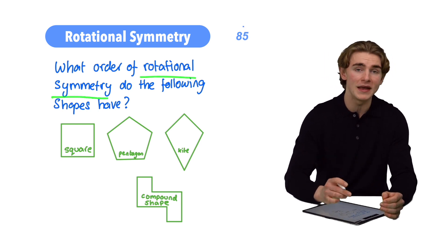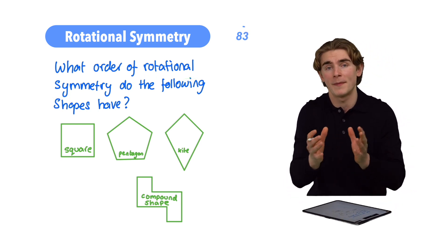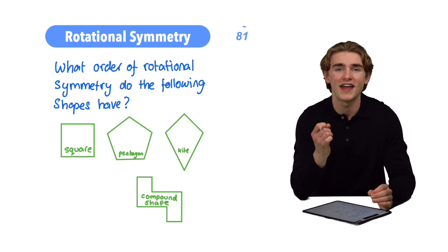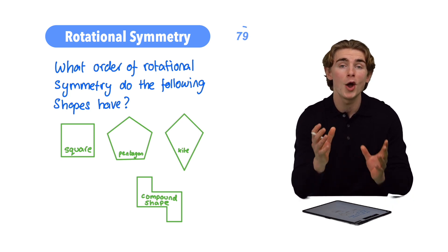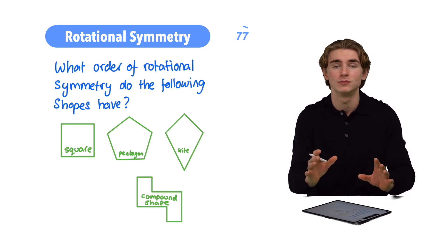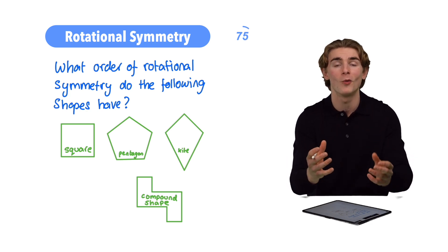Rotational symmetry. First off, what does it mean for a shape to be rotationally symmetrical? What it means is that if we rotate that shape around the center point, we can end up with exactly the same shape looking in exactly the same way as we started out with.